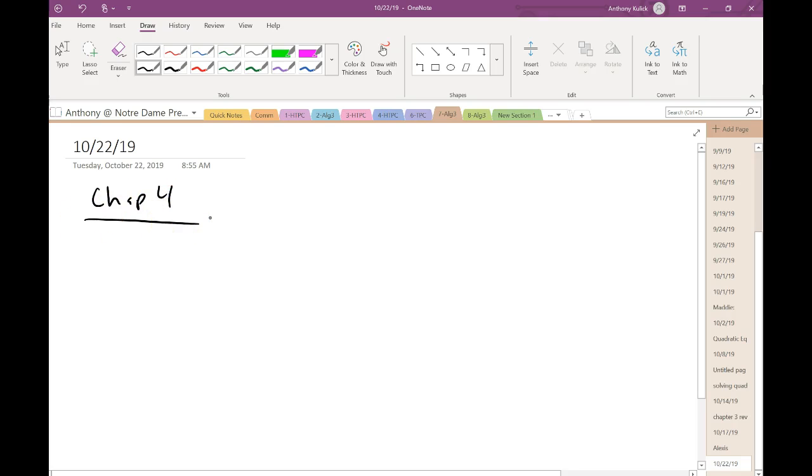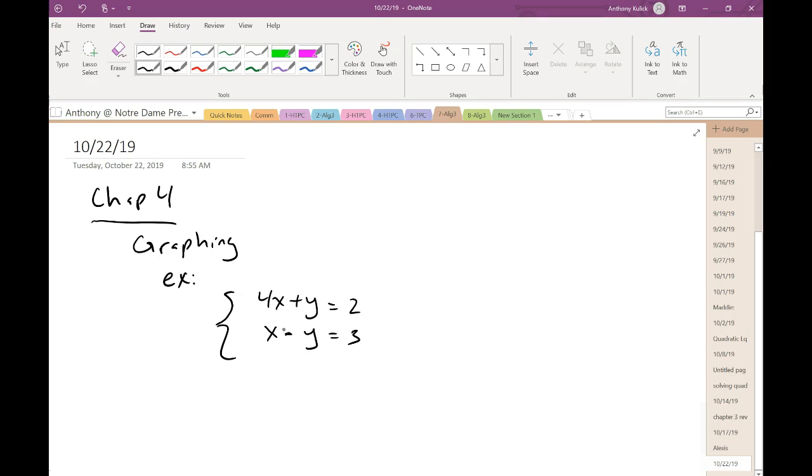Okay, so what we've talked about already in chapter 4 is solving systems of equations. One way that we've talked about is by graphing. So for example, let's say that we have the system 4x plus y equals 2 and then x minus y equals 3.